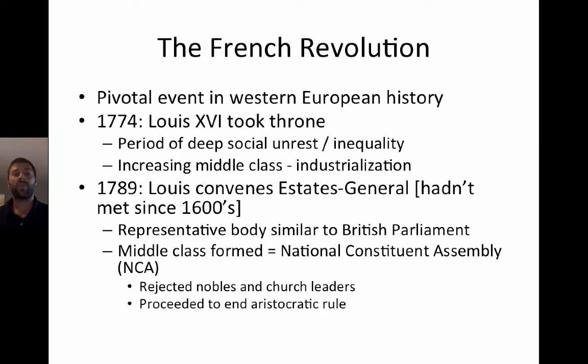The French Revolution is a pivotal event in Western European history. In 1774, Louis XVI took the throne during a period of deep unrest, inequality, and increasing middle classes due to industrialization. In 1789, Louis convened the Estates General, which hadn't met since the 1600s. That was his major mistake, because as he convened it to address economic problems, the middle class — not given a say — decided to form a separate national constituent assembly, effectively beginning the French Revolution. They rejected the nobles and church leaders and proceeded to end aristocratic rule.